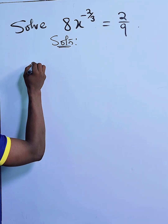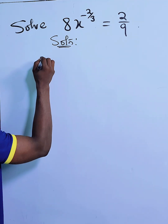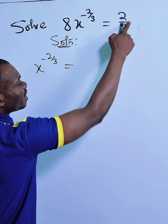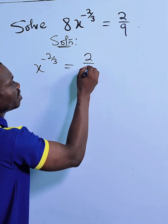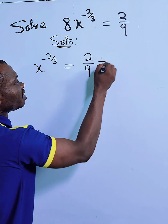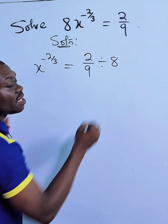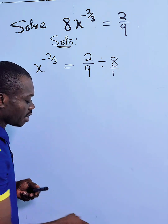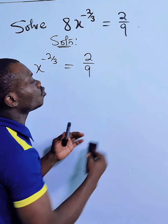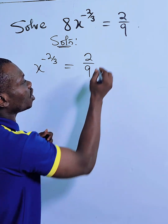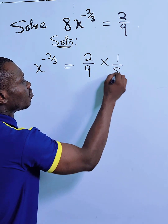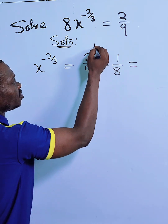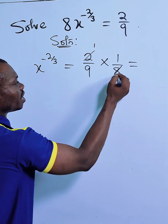If I divide here by 8, I will get X to the power of 2 over 3 equal to — see the way I'm going to write it — 2 over 9 divided by 8. Why did I do that? Because 8 is 8 over 1, so I want to change it to multiplication, and that will give me 1 over 8. This can reduce here: 1 here, 4 here.